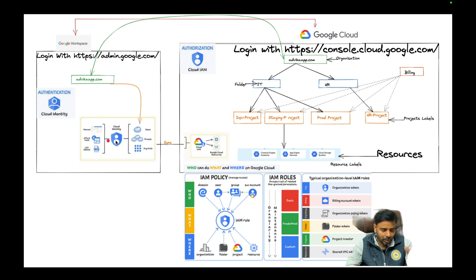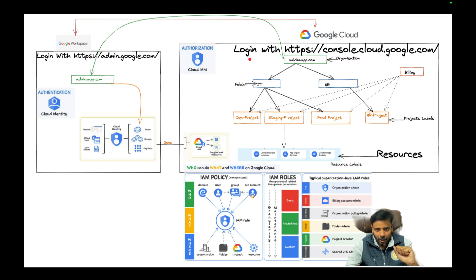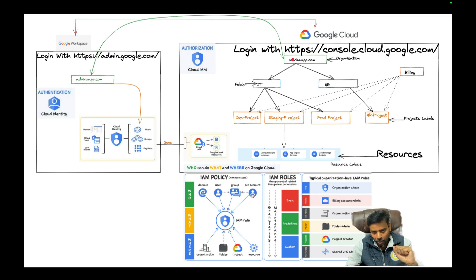Once you enable the Cloud Identity option, it will sync up with Google Cloud Platform. In Google Cloud Platform, you log in at console.cloud.google.com. Whatever organization you've created in Workspace will also reflect in Google Cloud Platform once you log in there.